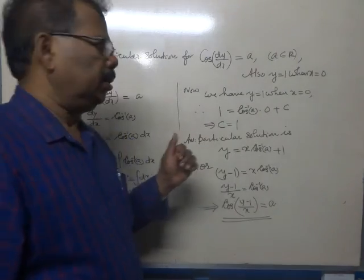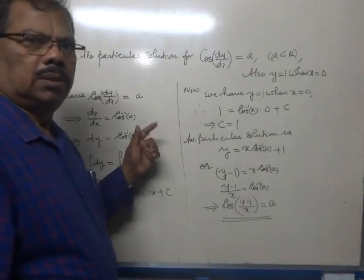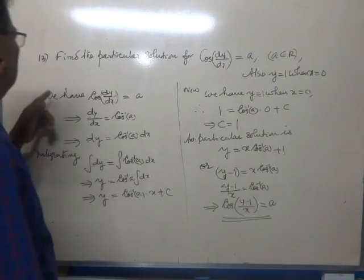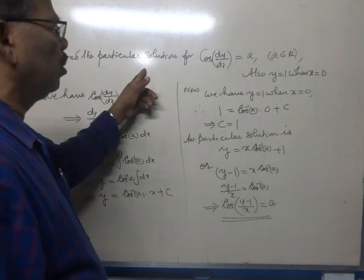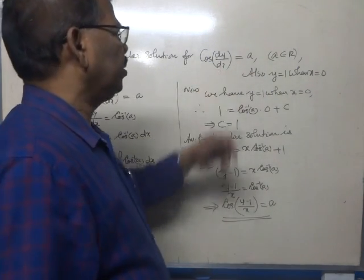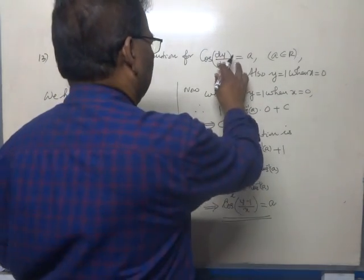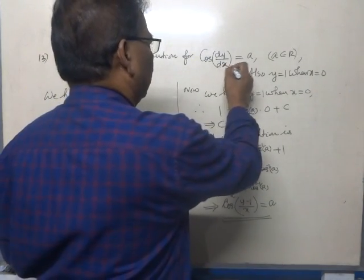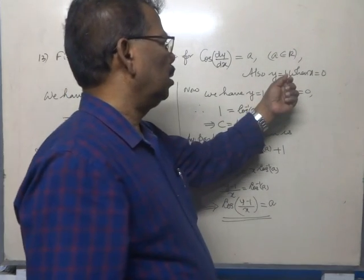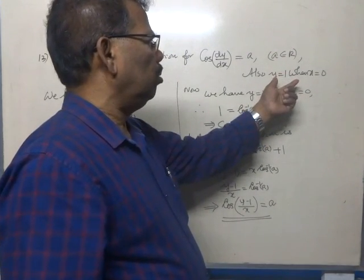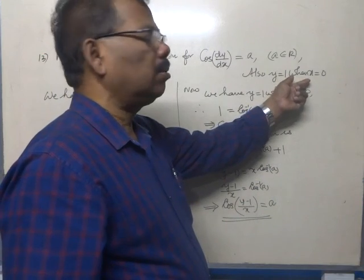Now question number 13, in that same exercise. Find the particular solution of cos(dy/dx) = a, where a belongs to real numbers, and also y equals 1 when x equals 0.